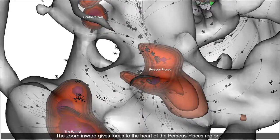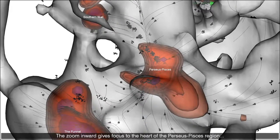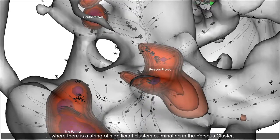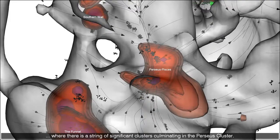The zoom inward gives focus to the heart of the Perseus Pisces region where there is a string of significant clusters culminating in the Perseus cluster.